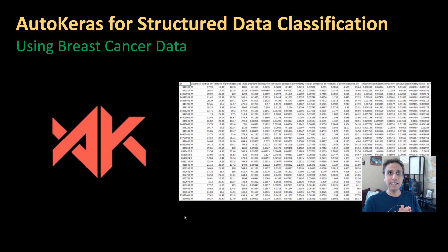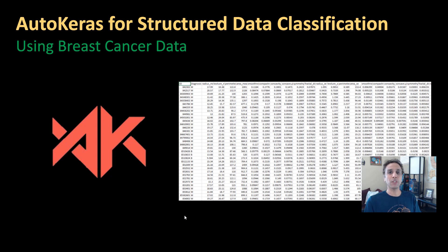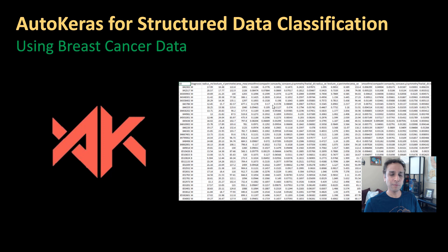In this tutorial, let's see how to use AutoKeras on structured data classification. What do we mean by structured data? Think of this as data in an Excel sheet or CSV file where you have different columns, and in this example we're going to look at classification — though exactly the same structure can be used for regression.